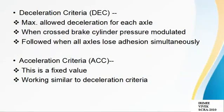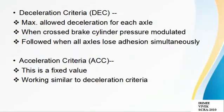DEC — deceleration criteria — is the maximum allowed deceleration for each axle. When crossed or breached, the brake cylinder pressure is modulated. The deceleration criteria is followed when there is simultaneous loss of adhesion of all the axles. ACC — acceleration criteria — is a fixed value and its operation is similar to that of deceleration criteria.